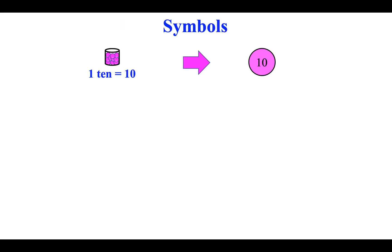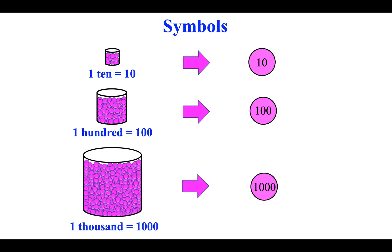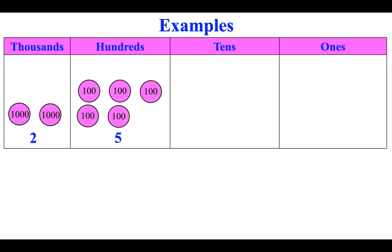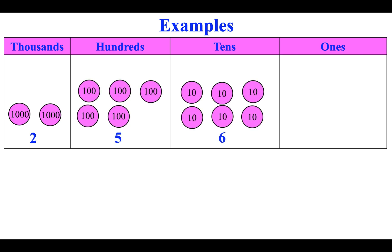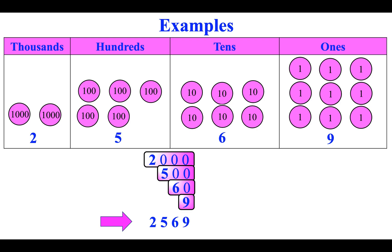Symbols. One ten is a ten circle. One hundred is a hundred circle. One thousand is a thousand circle. Example: two thousands, five hundreds, six tens, and nine ones. The number is two thousand, five hundred, sixty-nine.